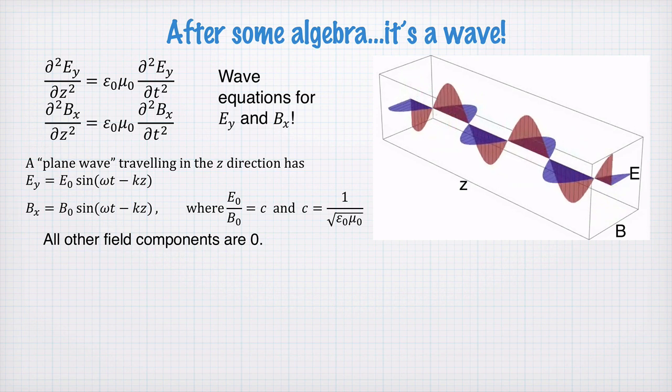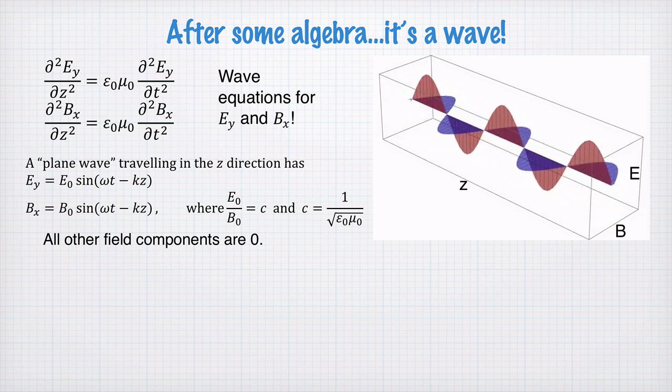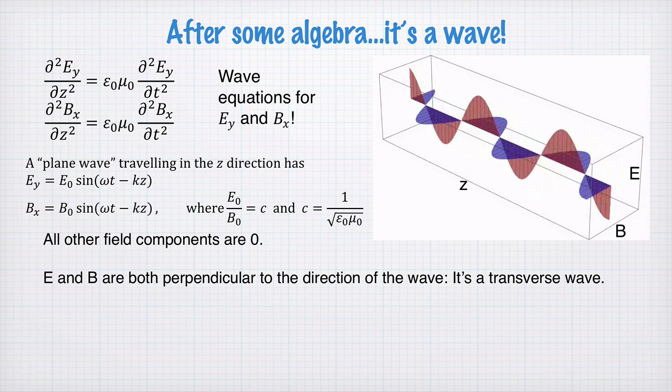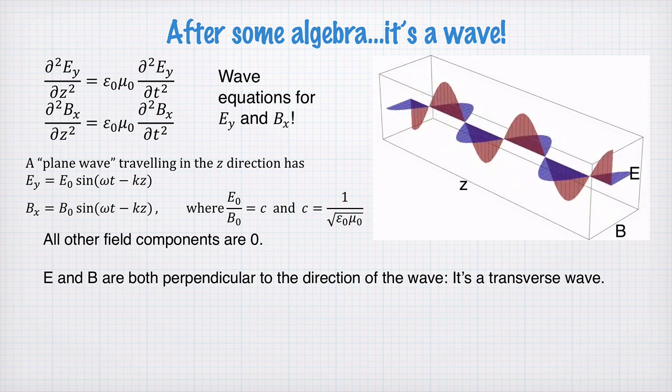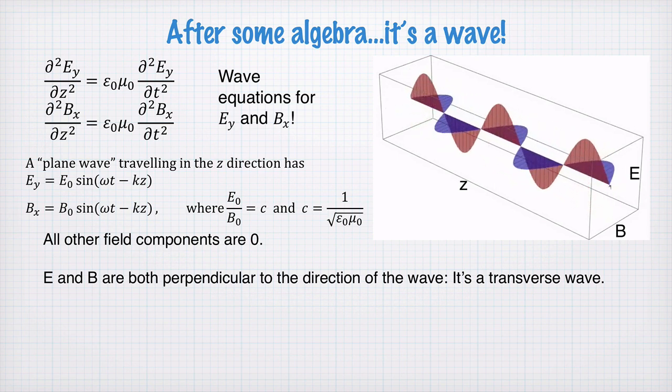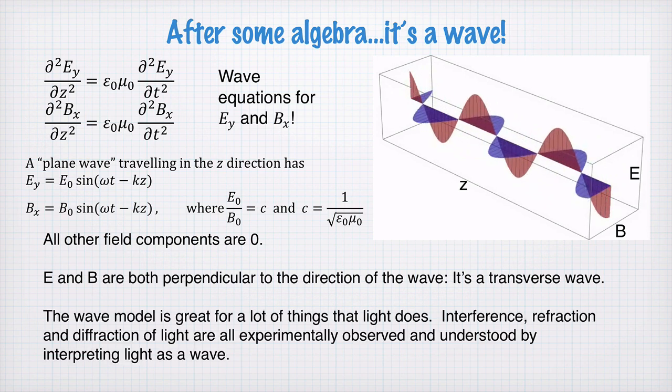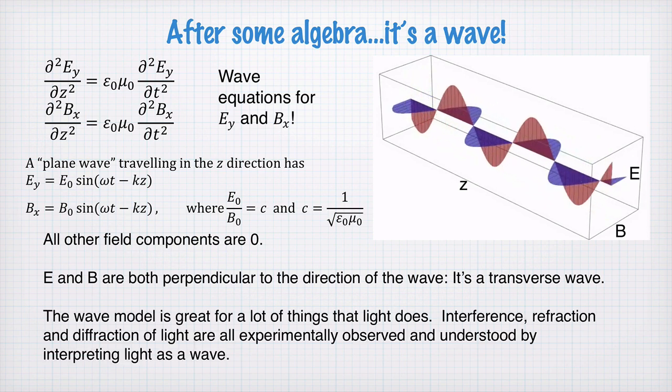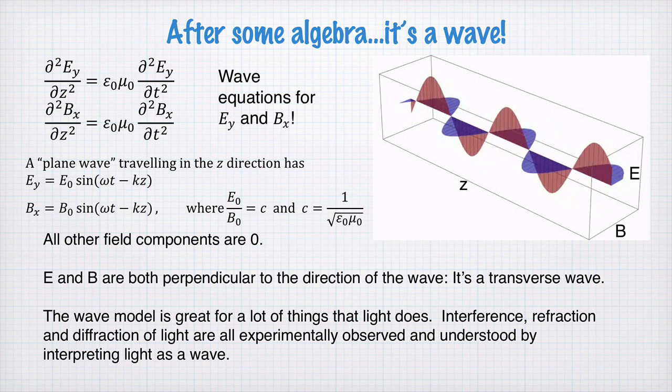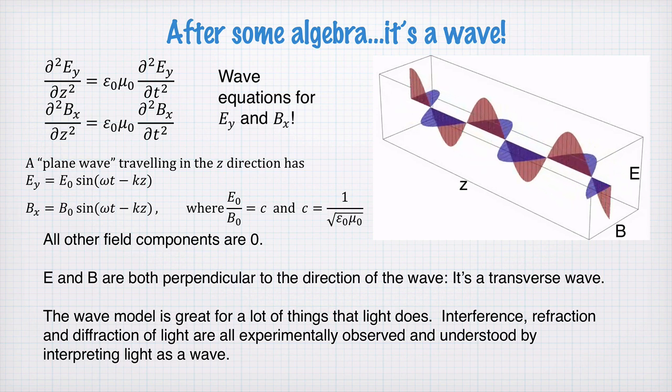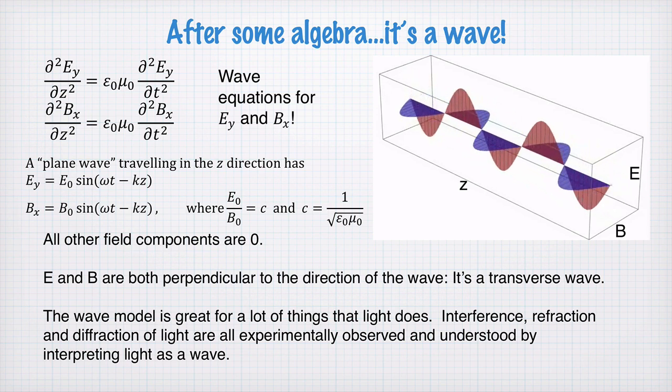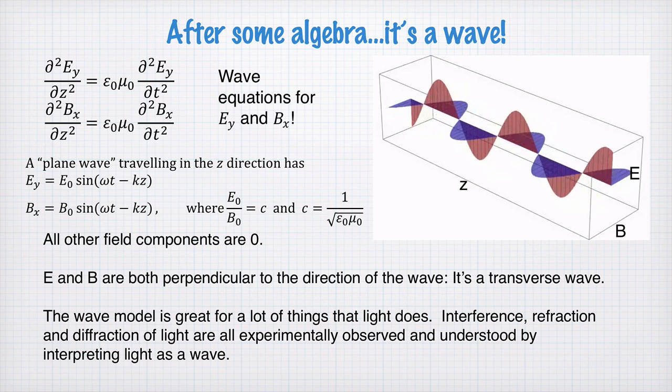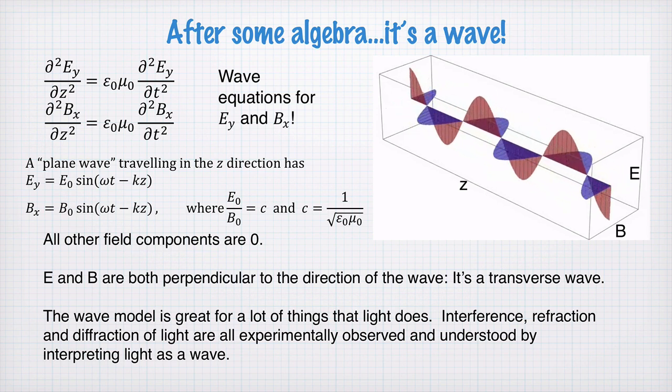So all the other field components, as I've already said, are zero. E and B are both perpendicular to the direction of the wave, so it's a transverse wave. Transverse electric wave, transverse magnetic wave. And the wave model is great for a lot of things that light and electromagnetic waves do. We can think about interference, refraction and diffraction. And all of these are experimentally observed and understood by interpreting light as a wave.